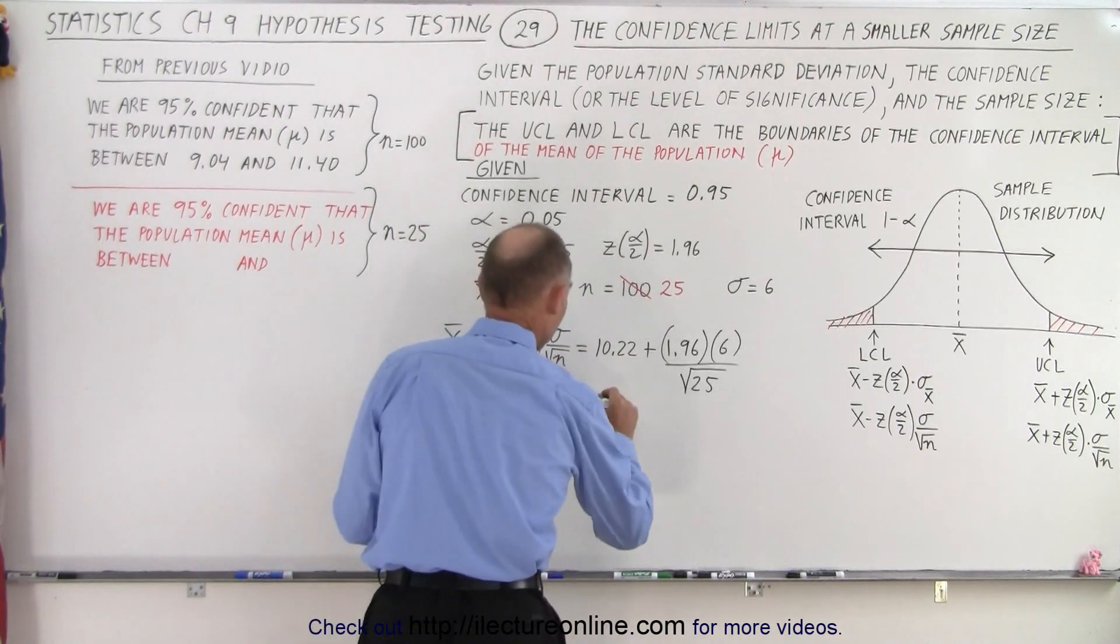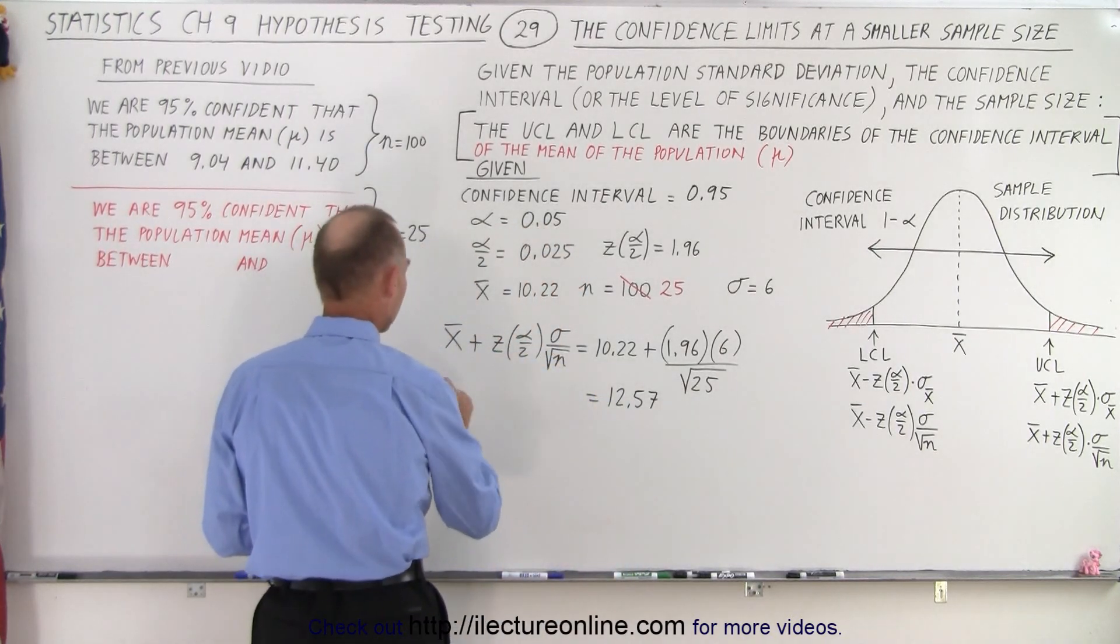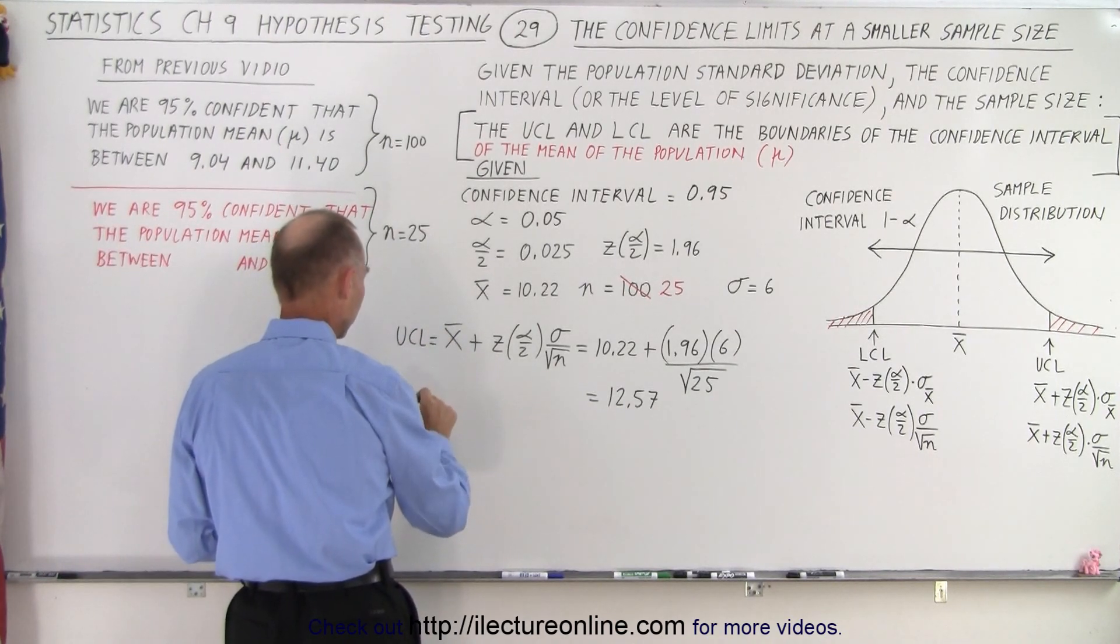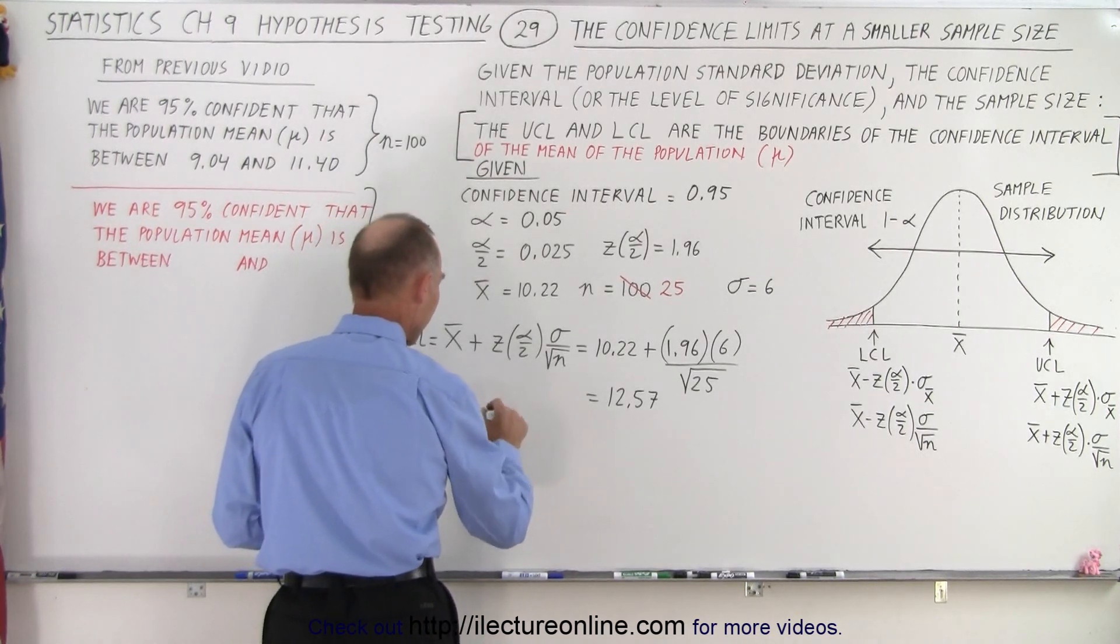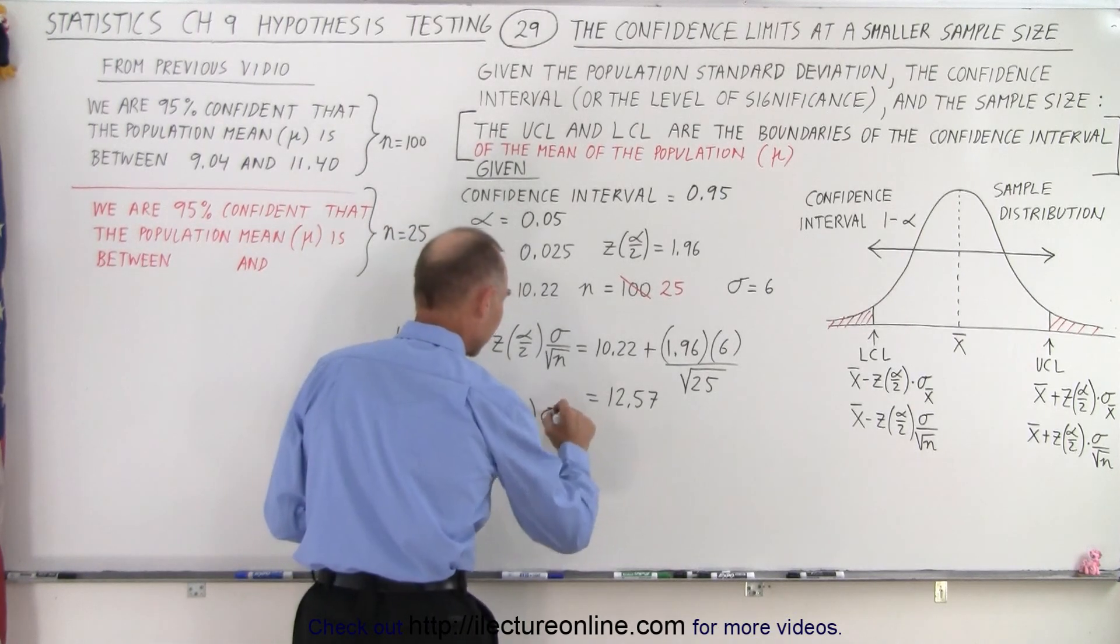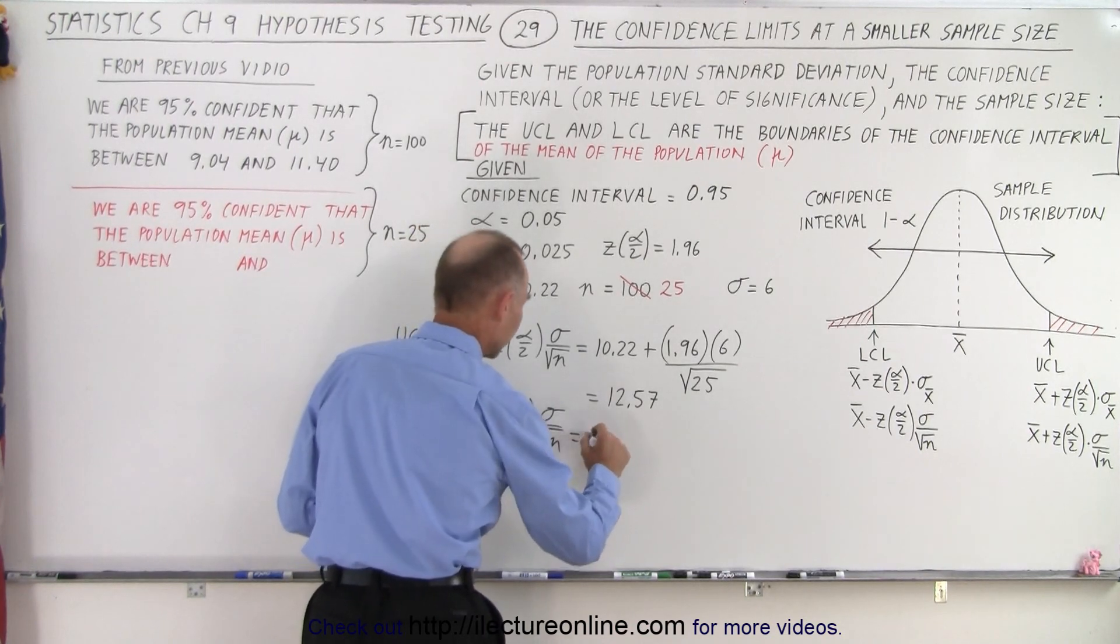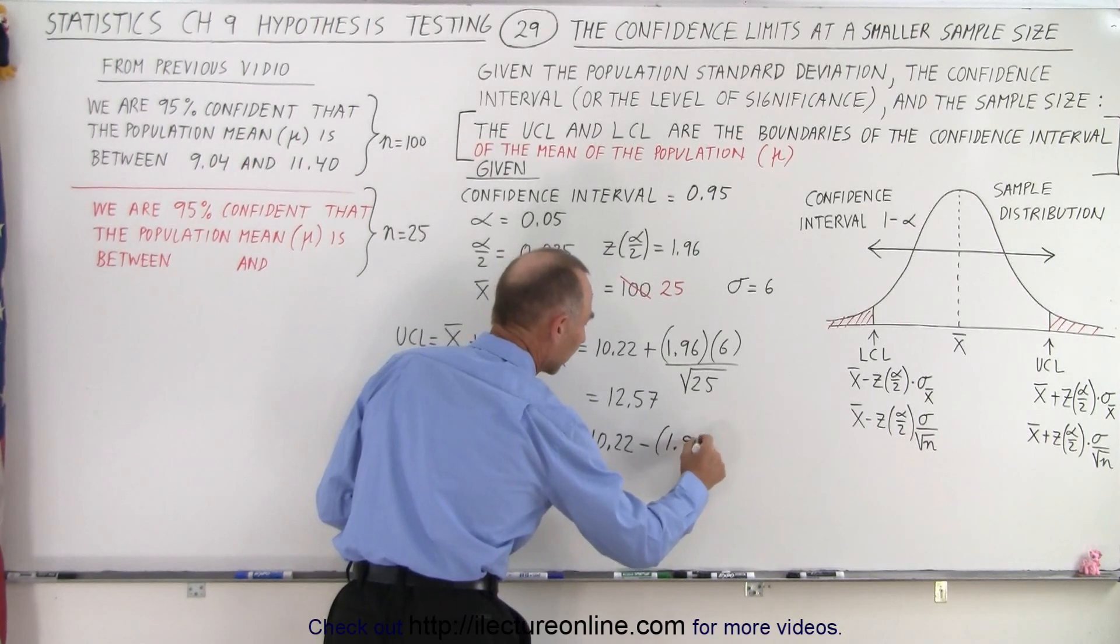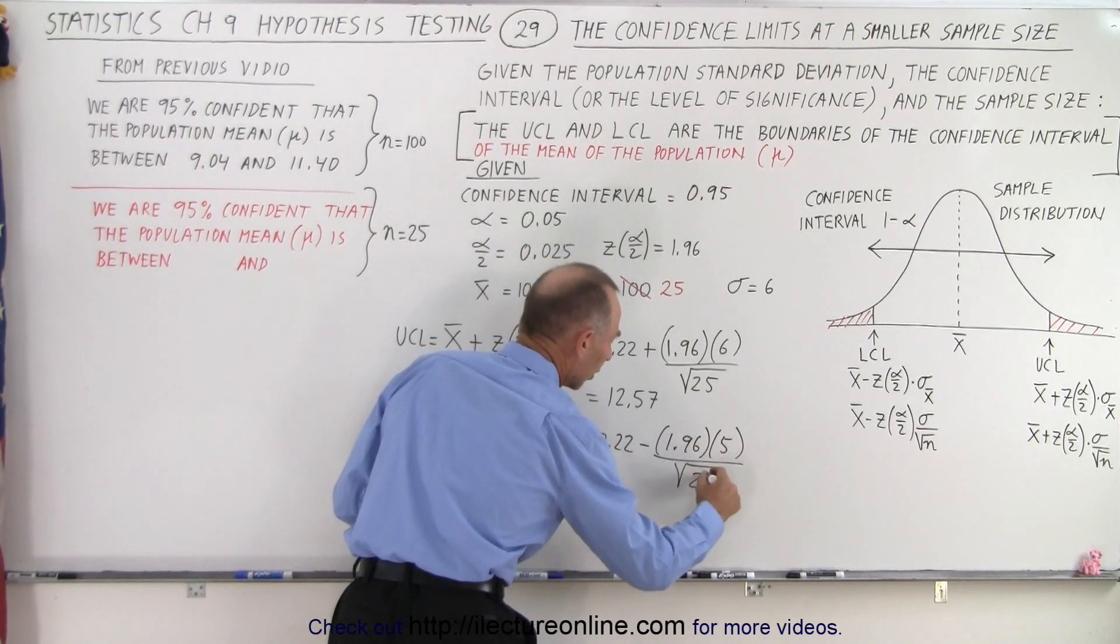Now we do the same for the lower confidence limit. That is equal to the mean of the sample minus the z-score at the half level of significance times the standard deviation of the population divided by the square root of the sample size, which is 10.22 minus 1.96 times 6 divided by the square root of 25.